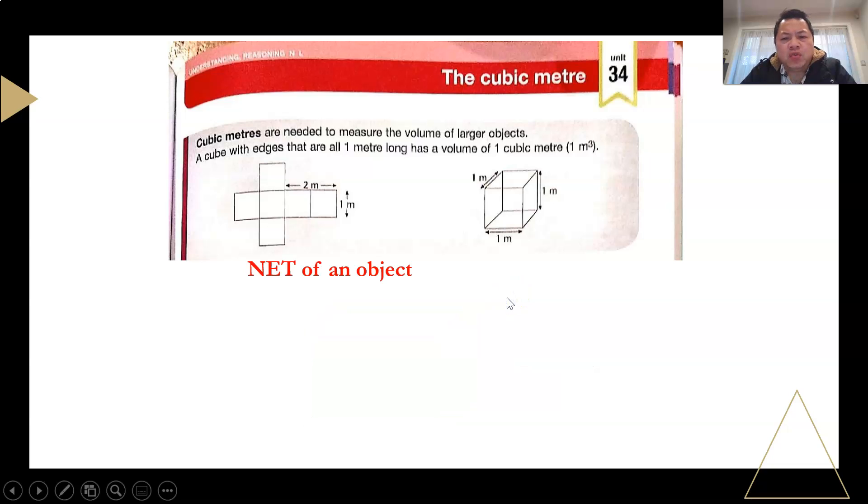The other thing that we need to know is the net of an object. This is a net - net is like a skeleton of an object. When you cut it open along the edges, you actually get the skeleton of an object. So whenever you say a net of an object, it means that 3D object is being cut open, and you have the basic shapes that are put together to form the object itself.